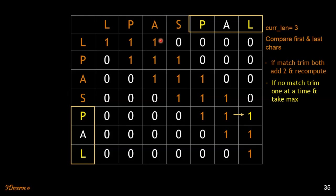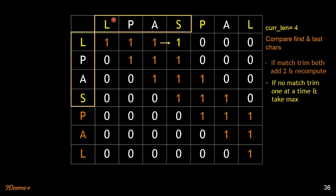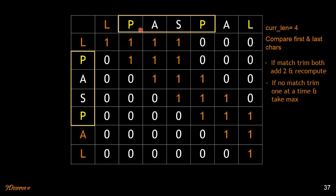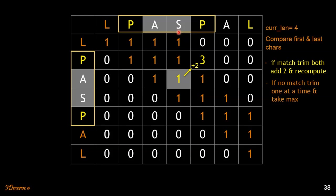Let's go to substrings of length 4. For LPAS, the first and last characters do not match, so we follow the second rule and take the max, which is 1. For the next substring of length 4, PASP, the first and last characters match. We trim out both P characters. The remaining substring is AS, with LPS of 1. We add 2 to that, getting 3. So the substring PASP has a longest palindromic subsequence of PAP with length 3.